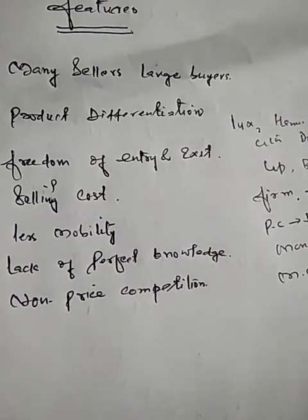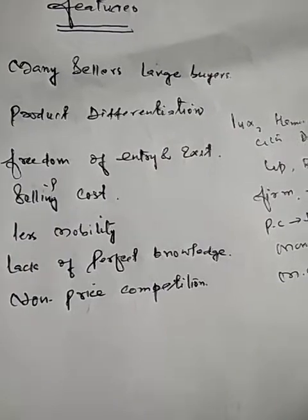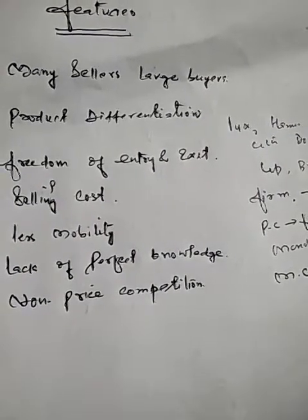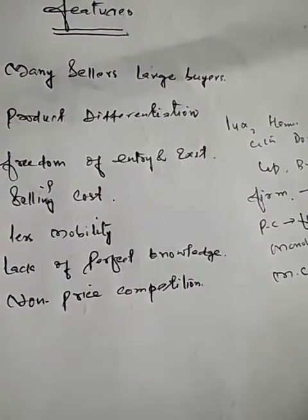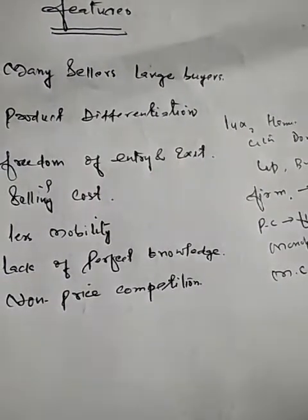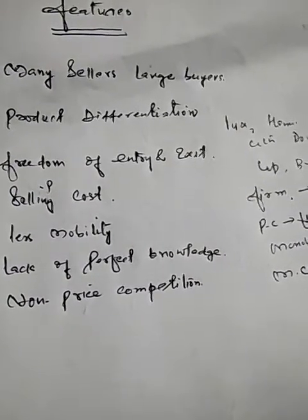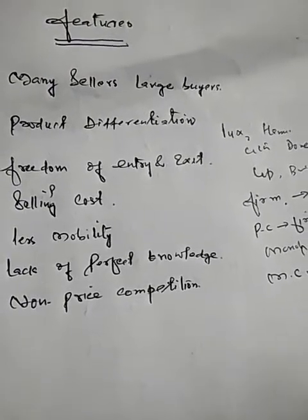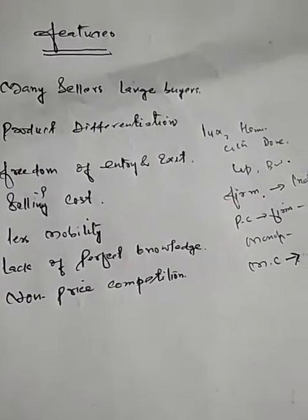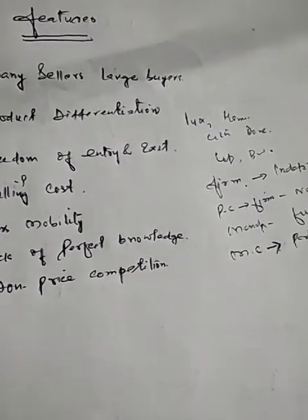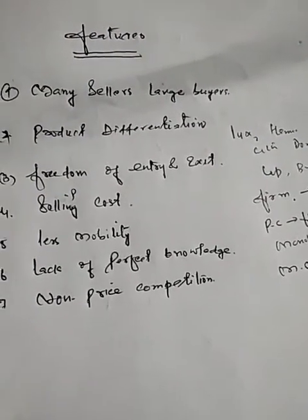Firms entering monopolistic competition may have to face several difficulties. Some firms' products can be legally patented, and no rival firm can produce and sell that product. For example, no firm can produce Lux because it is the sole proprietorship of Hindustan Unilever Limited. A rival can enter, but they must produce a different product under a different name and brand.